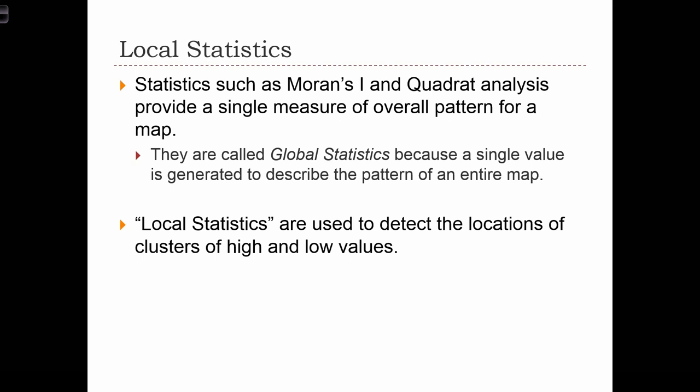Statistics such as Moran's I and quadrat analysis provide a single measure of spatial pattern for a map. For this reason, they are called global statistics because a single value is generated to describe the pattern of an entire map.